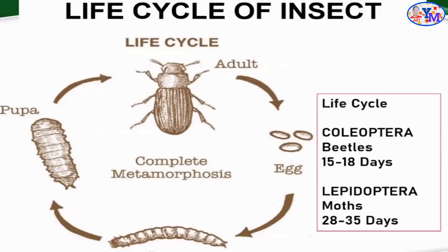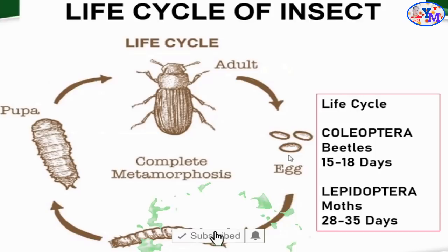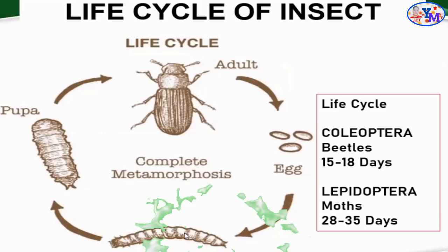Both insect orders undergo complete metamorphosis: egg, larvae, pupa, and adult. For Coleoptera, both the larval stage and adult stage consume and damage seeds. For Lepidoptera species, the larval stage is the most damaging, as the mouthparts at that stage are chewing type. Once the Lepidoptera completes its life cycle, the mouthpart changes to siphoning, so the adult no longer feeds on seeds but instead produces another set of eggs, which hatch into larvae that consume stored products.